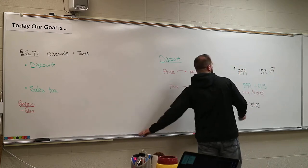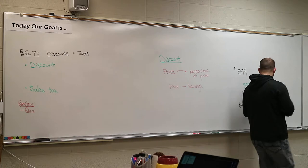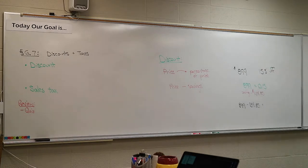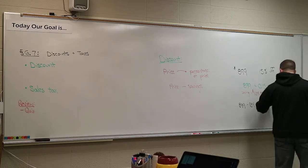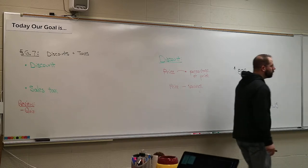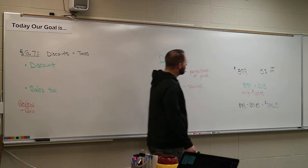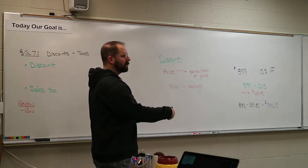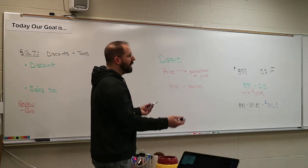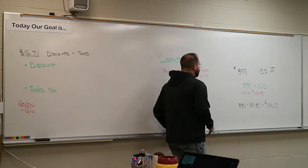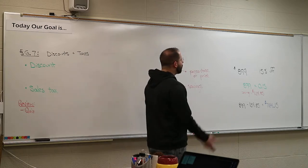Now I subtract: $899 minus $134.85 gives me $764.15. So that's a $764 phone — a lot of money. Obviously you don't pay it all at once; you pay over time through your carrier, maybe 10–15 dollars a month over a long period. But now Target had a better deal.